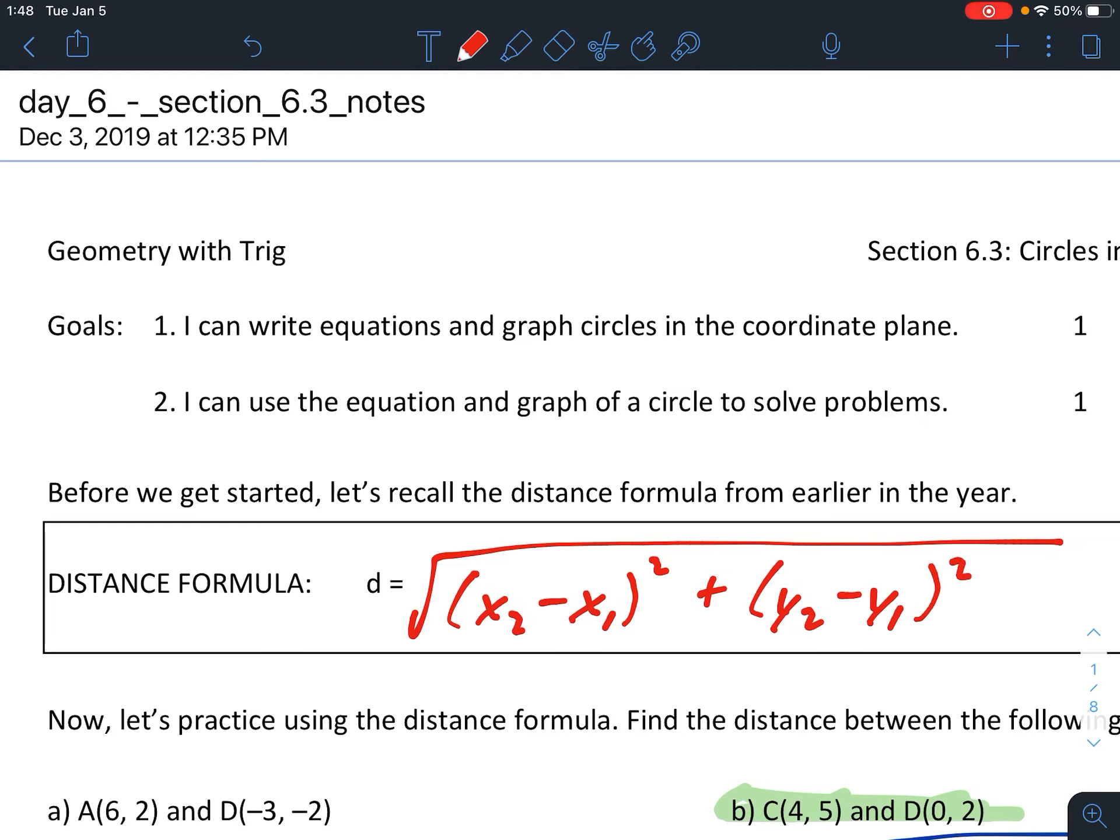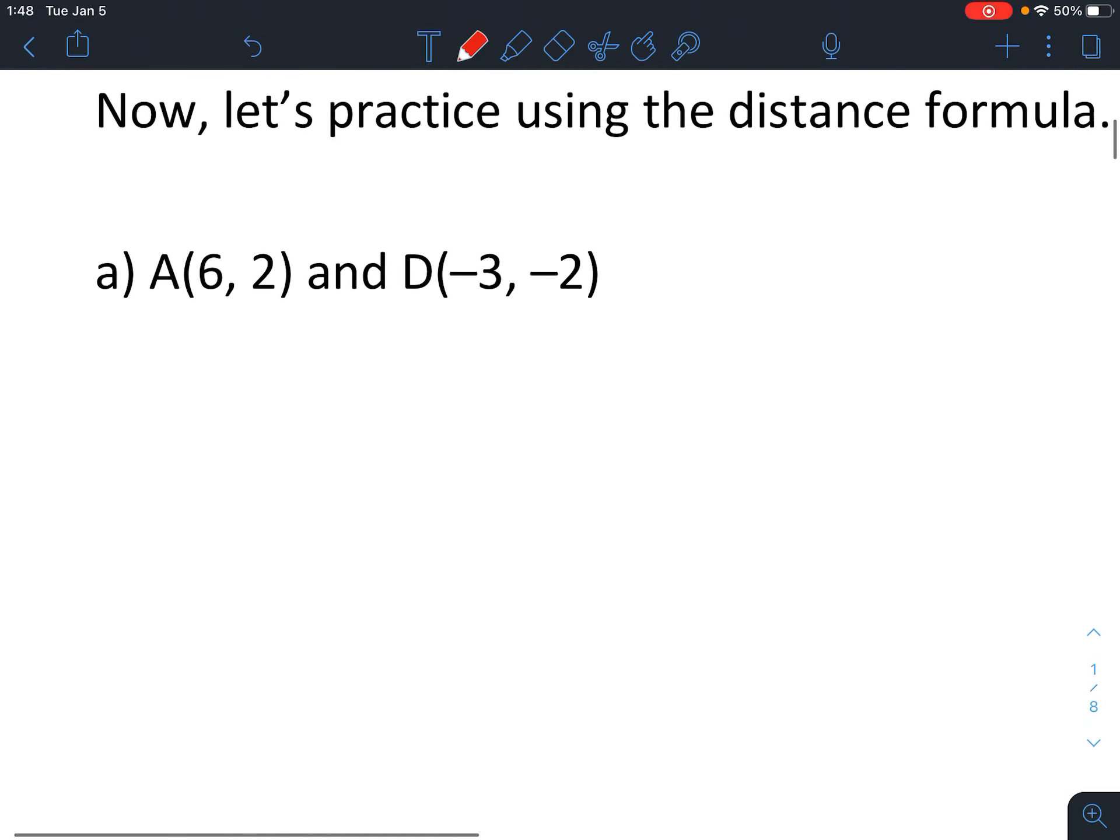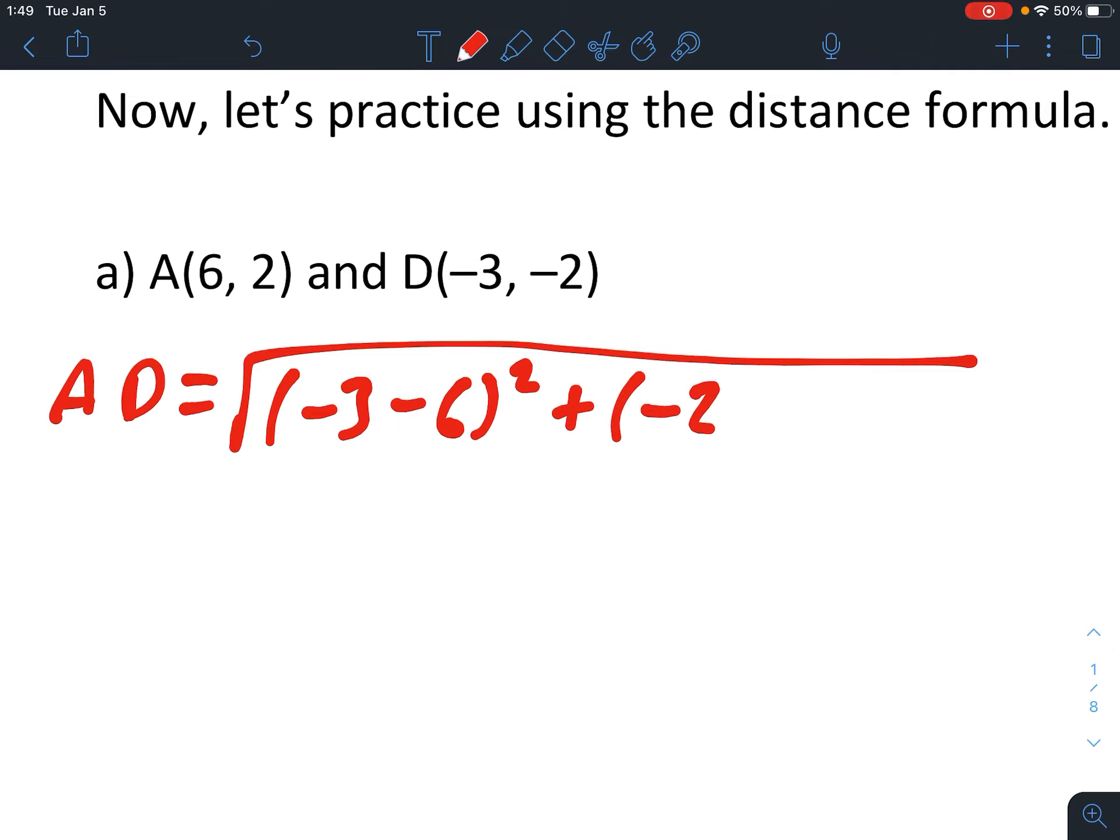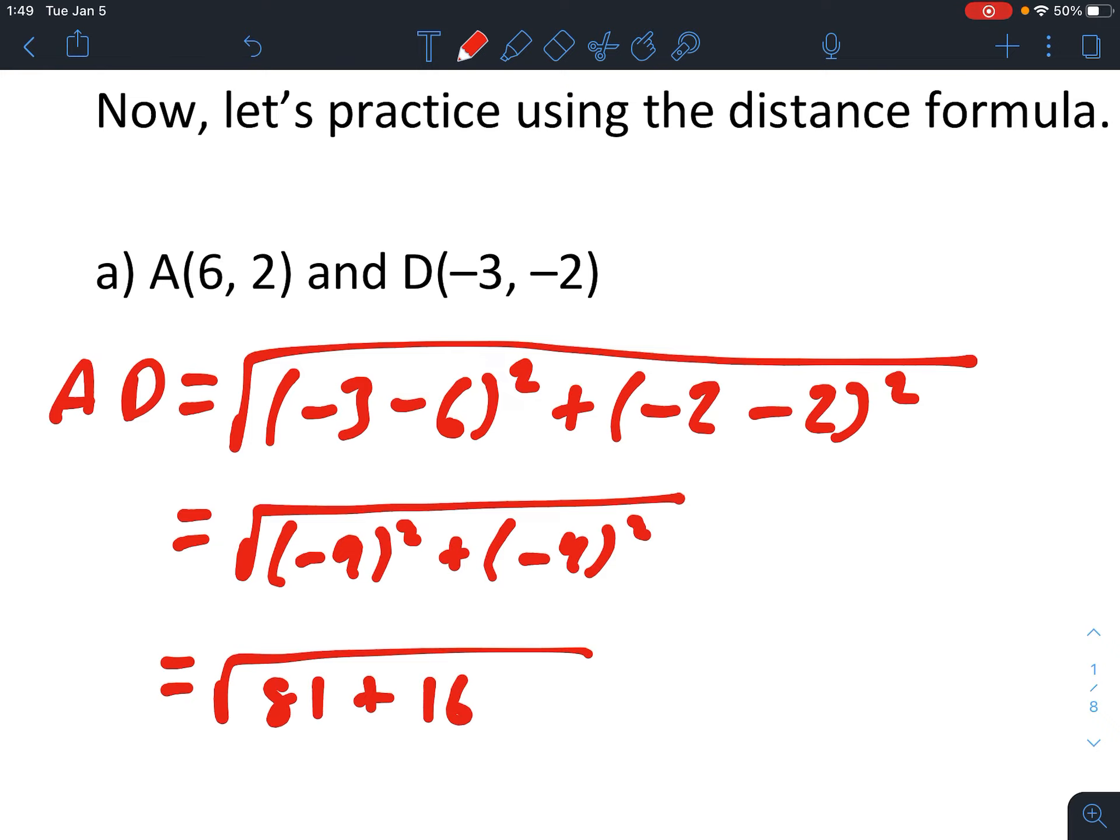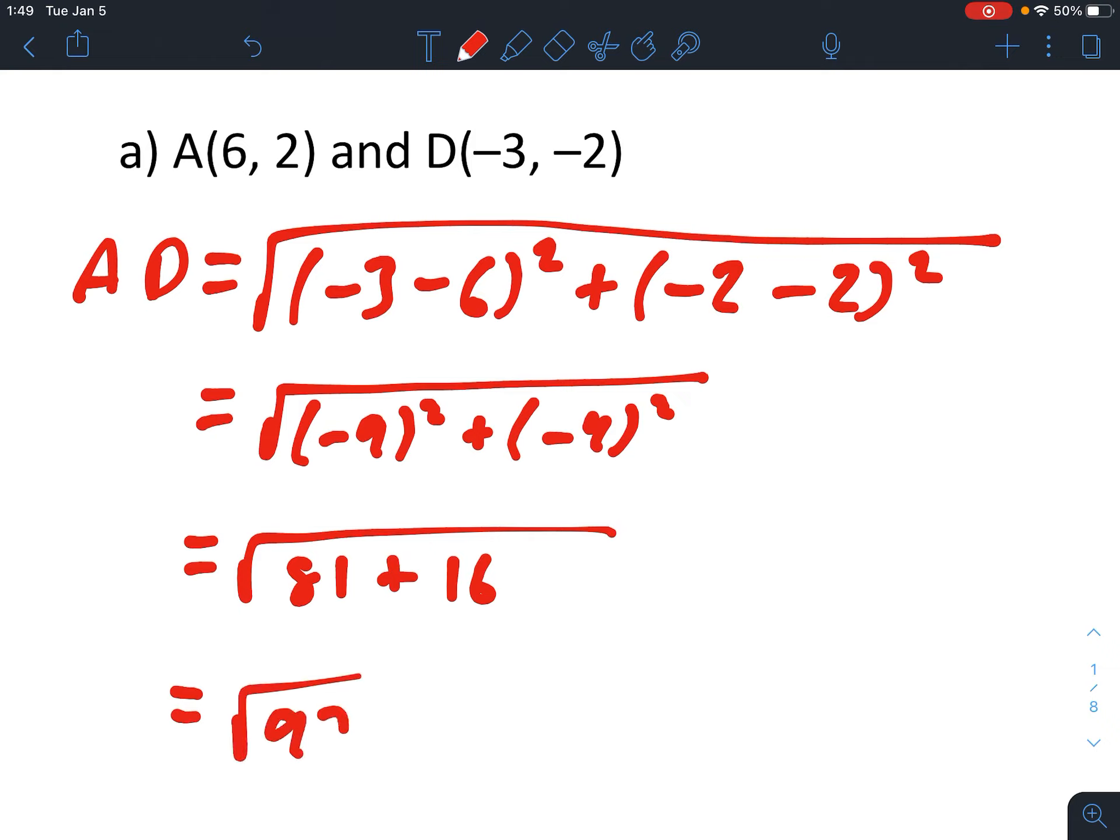Before we get into anything new today, we're going to practice that twice. So find the distance between points A and D. We'll call it AD, big square root sign. Now remember, it doesn't matter which x comes first. I'm going to do negative 3 minus 6 squared plus, now because I chose negative 3 first, I have to choose his partner, negative 2 minus 2 squared. And I just simplify this. That's negative 9 squared plus negative 4 squared, which is 81 plus 16, which is root 97. So AD is equal to the root 97. If you want an approximation for that, you can put that in your calculator, which is 9.849.